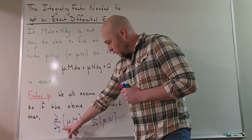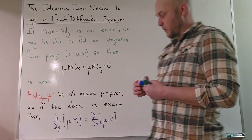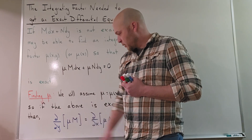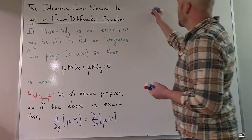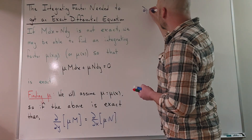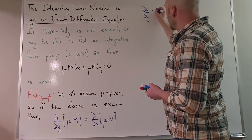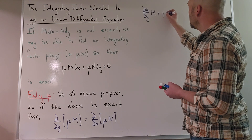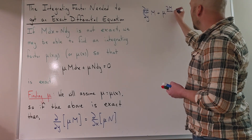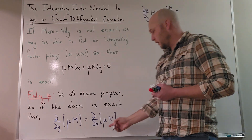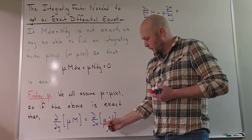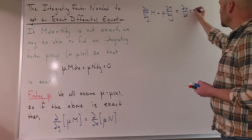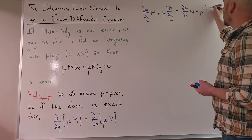This is a derivative of a product, so I can use the product rule on both sides. On the left-hand side, take the partial derivative with respect to y of the first factor, which is mu: that would be dμ/dy times m, plus mu times the partial of m with respect to y, so mu·∂m/∂y. On the right-hand side, again the product rule: take the partial derivative of the first factor with respect to x, so that would be dμ/dx times n, plus mu times ∂n/∂x.